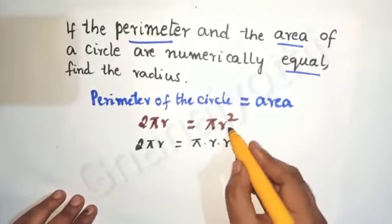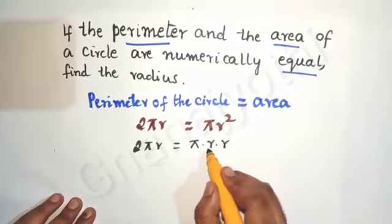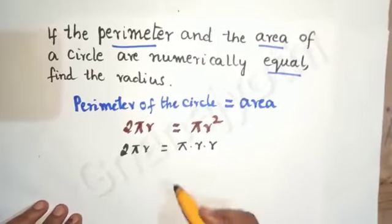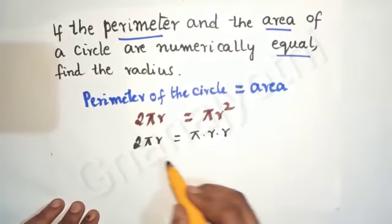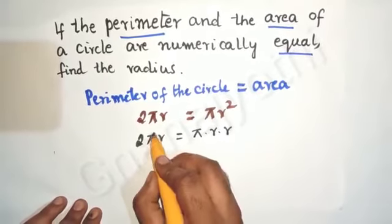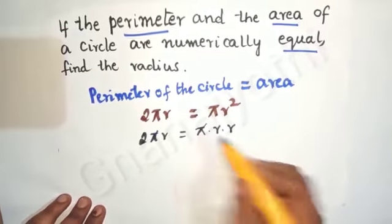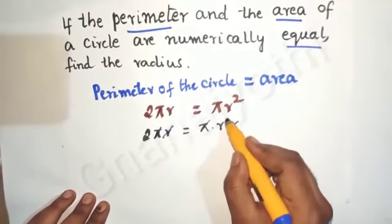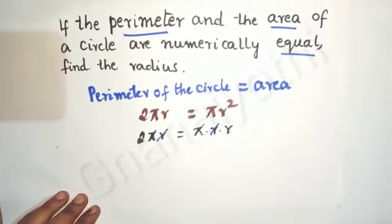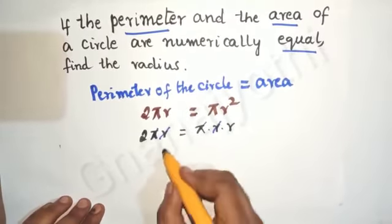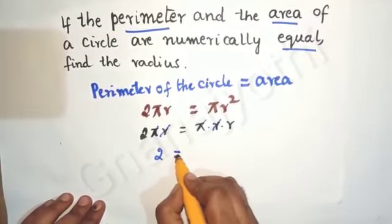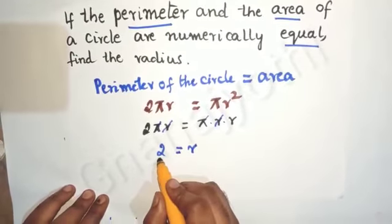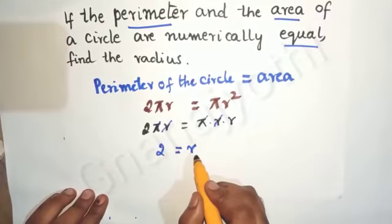I have written r² as r × r just for clarity. Now let us cancel the common terms on the left-hand side and the right-hand side. The π on both sides cancels, and one r on both sides cancels. The remaining terms give us 2 = r.